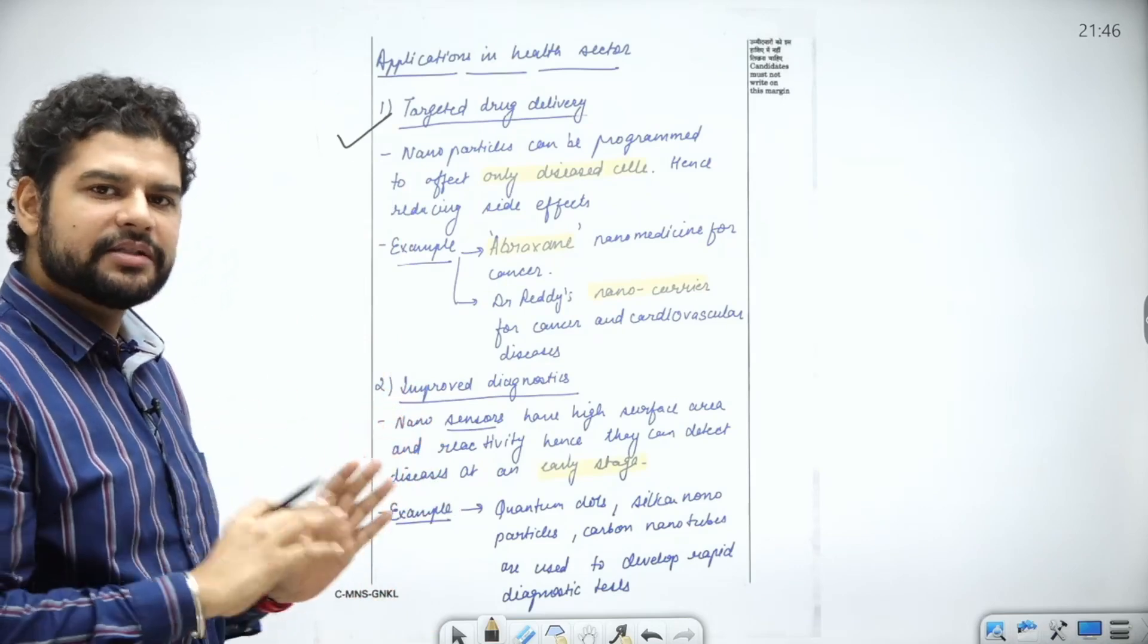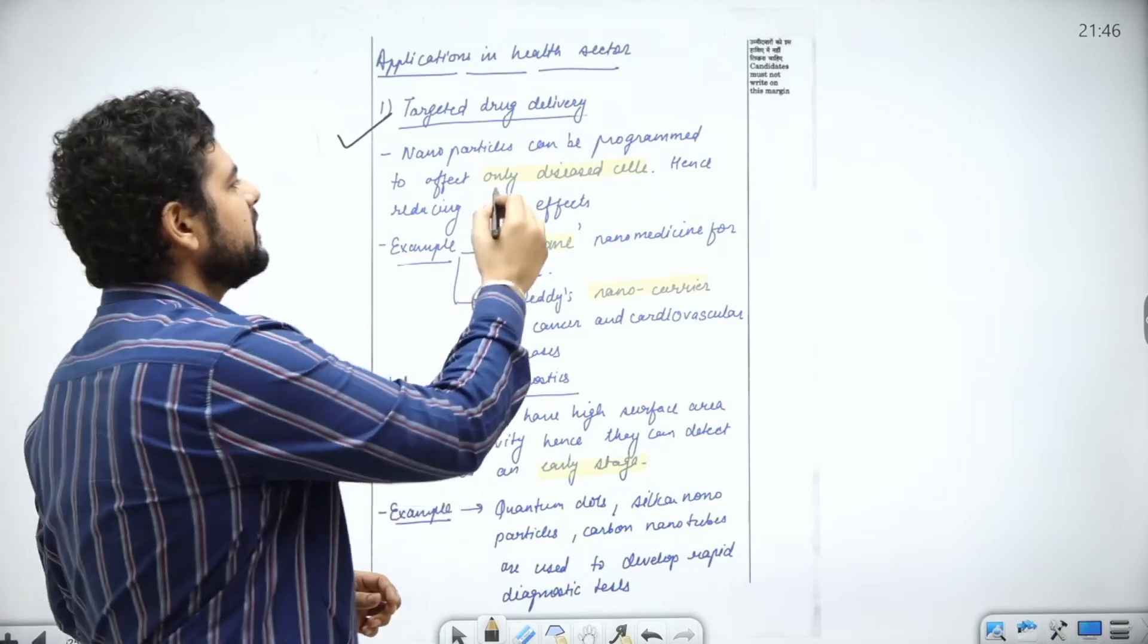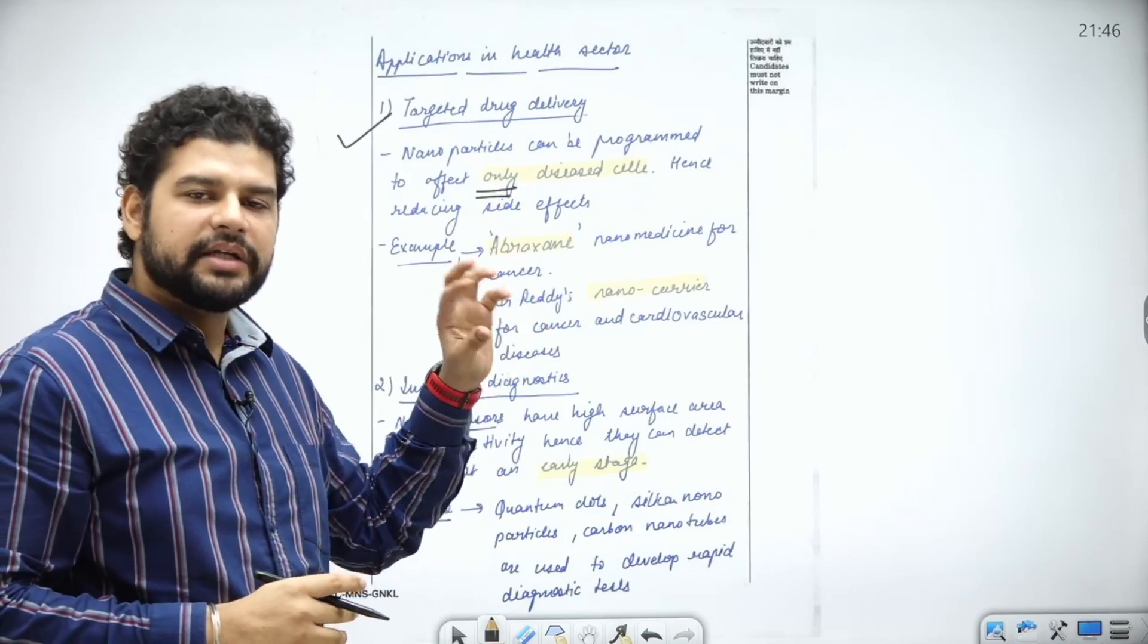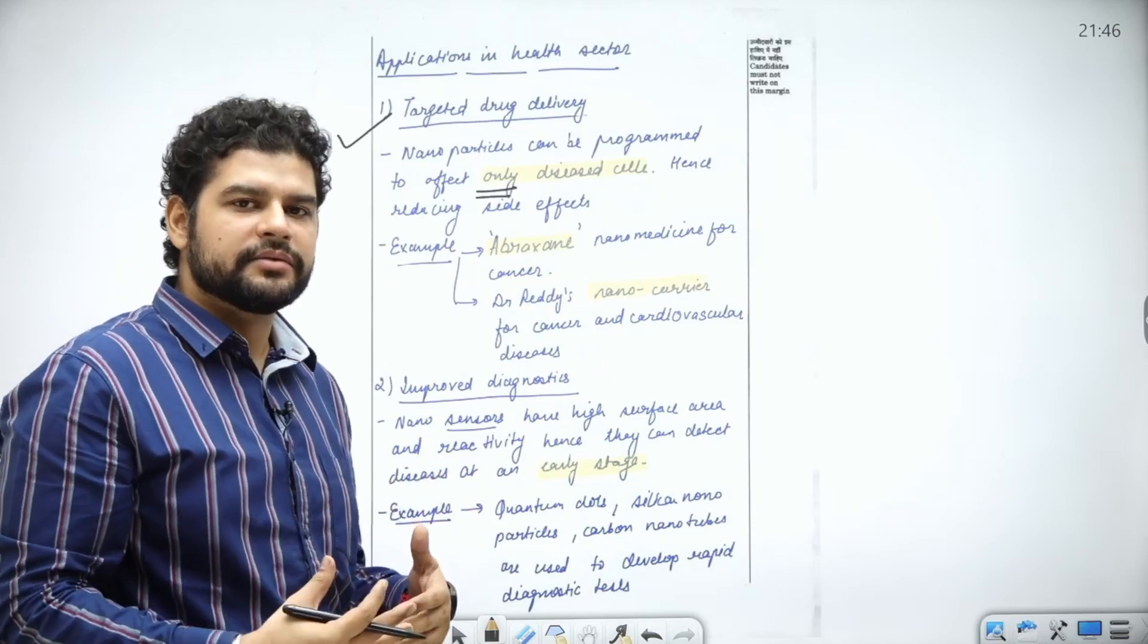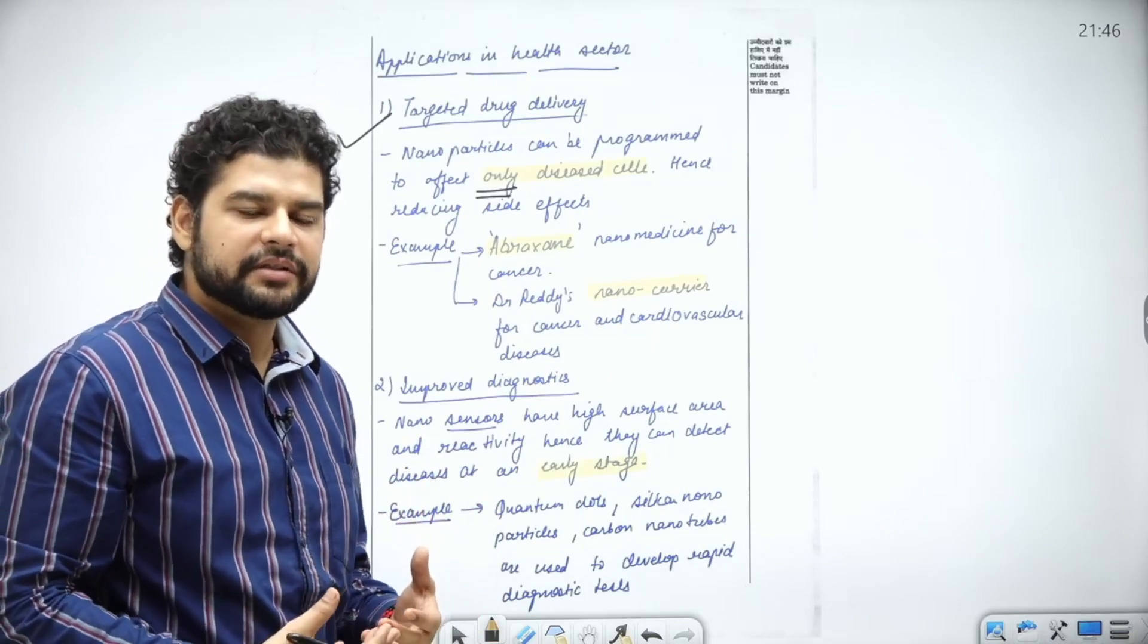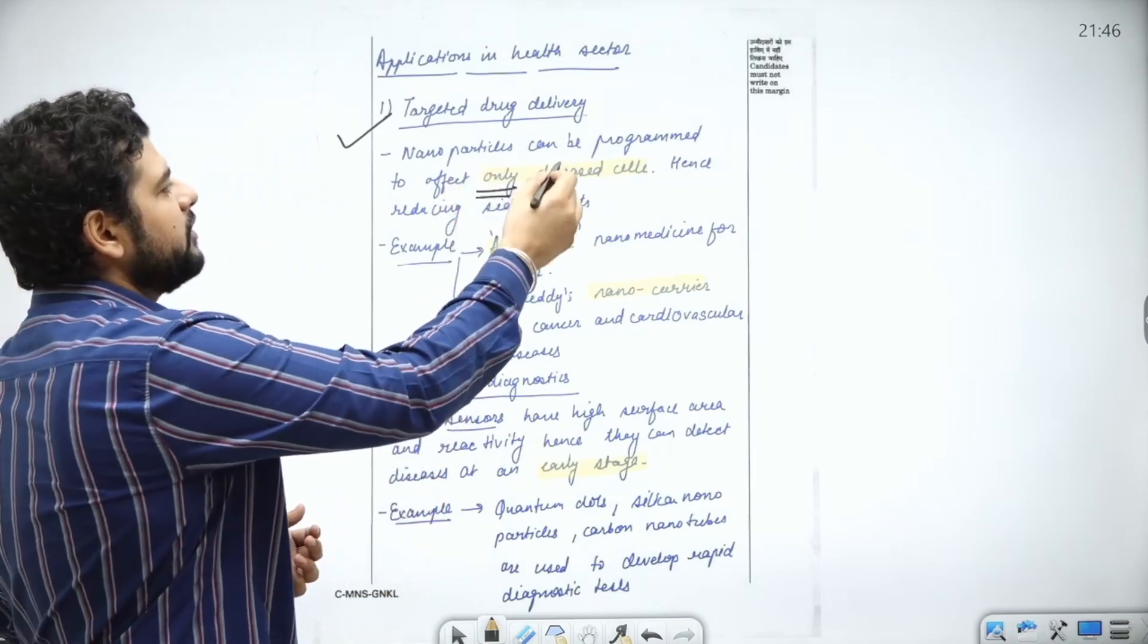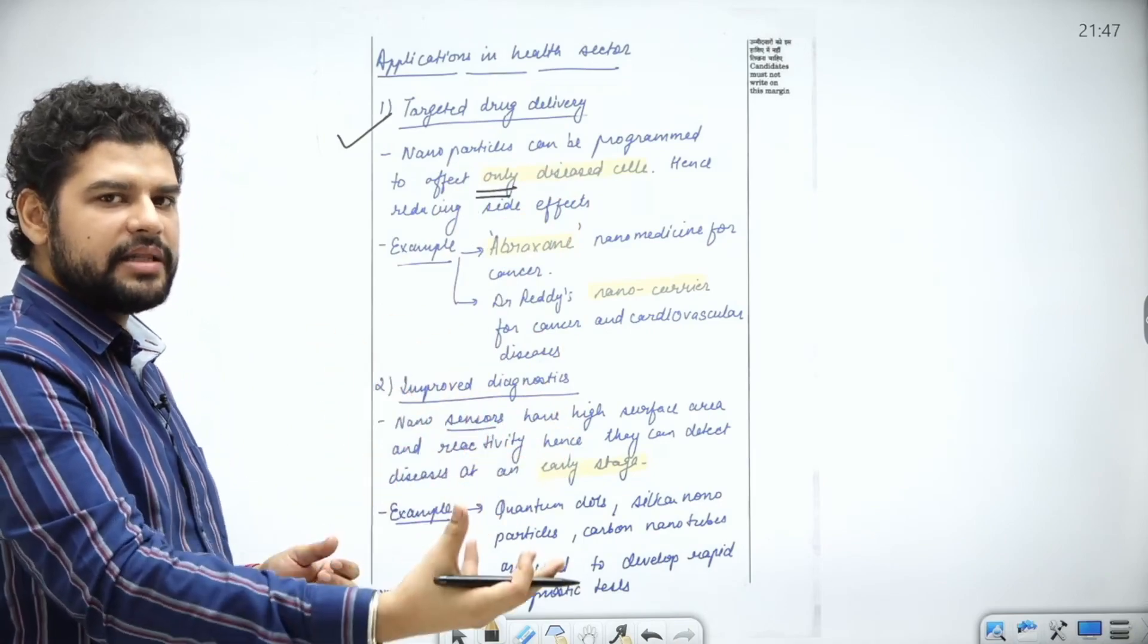First application is targeted drug delivery. We have seen this in the first question also, but this answer is a separate one, so we'll study this here too. Nanoparticles can be programmed to affect only the diseased cells. I have written the same theme, same topic in a different way. This creates a feeling of confidence that the same thing can be written in different ways.